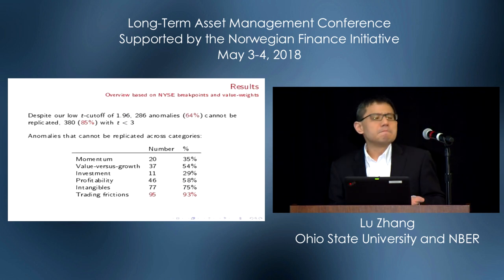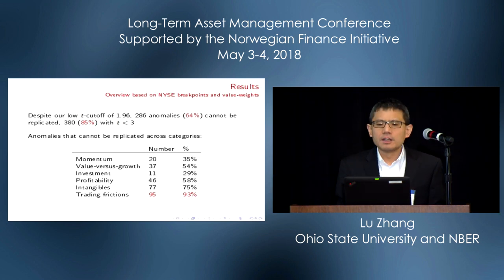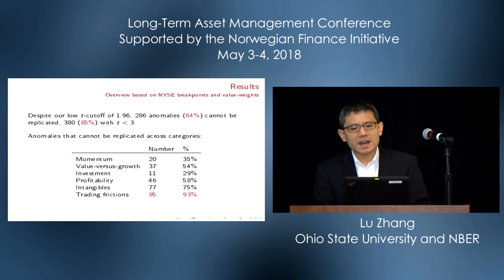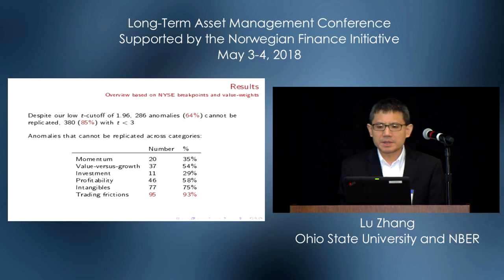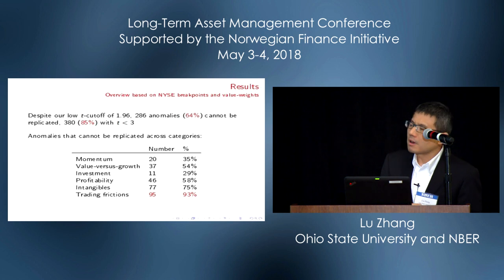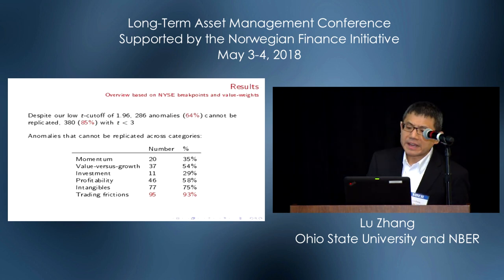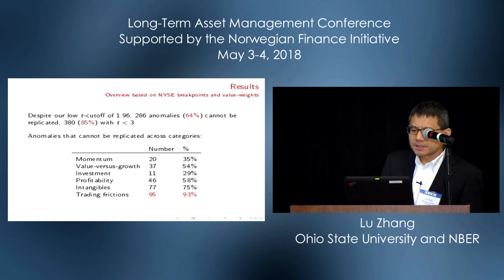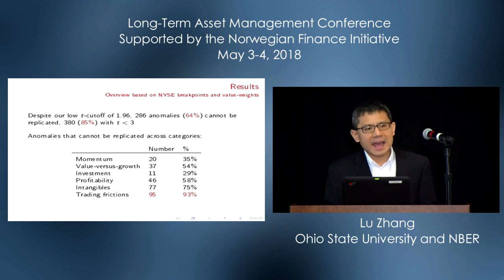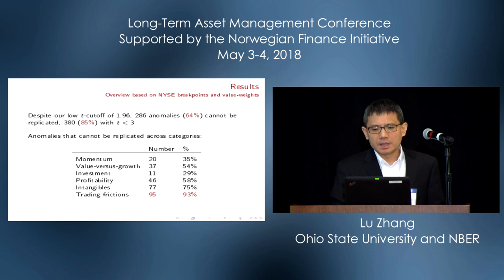Replication results. Despite our lenient hurdle of a T cutoff of 1.96, in total 286 anomalies are insignificant, or 64%. If we impose the higher T cutoff value of 3 from Harvey and co-authors, that's 85%. Across different categories, the trading frictions and liquidity category is hit the hardest — 93% of them fail to show up.